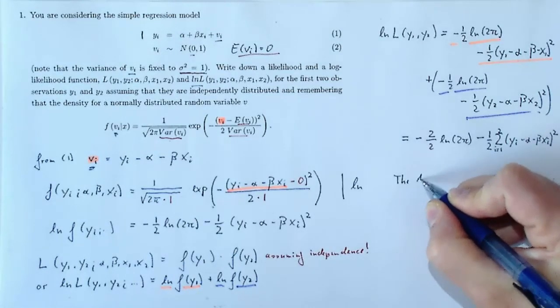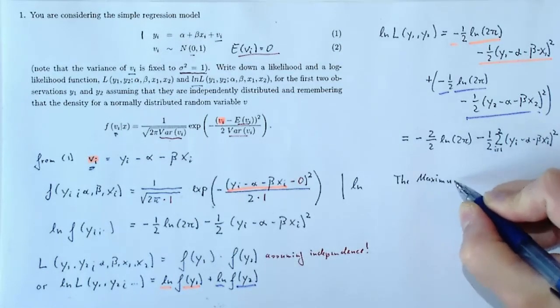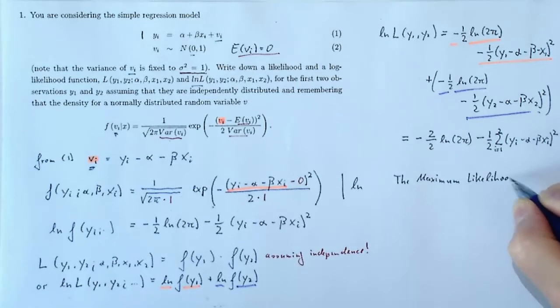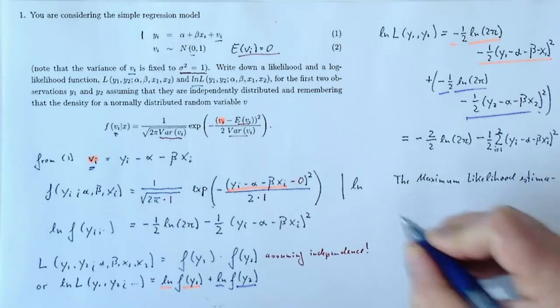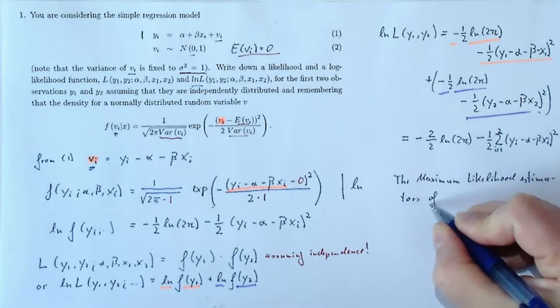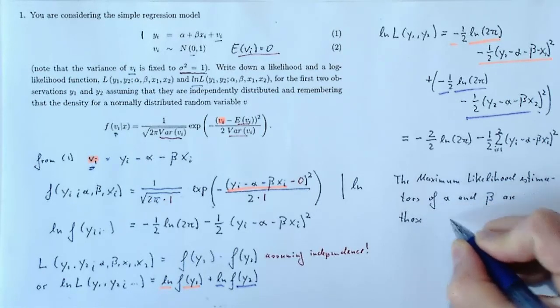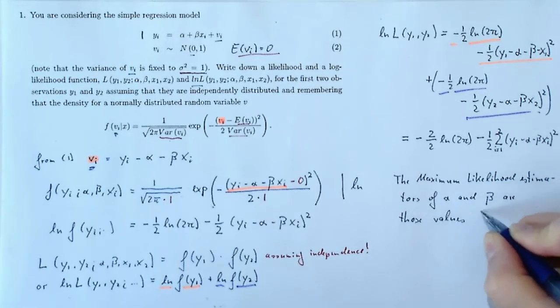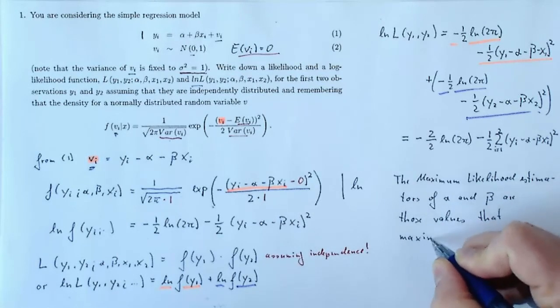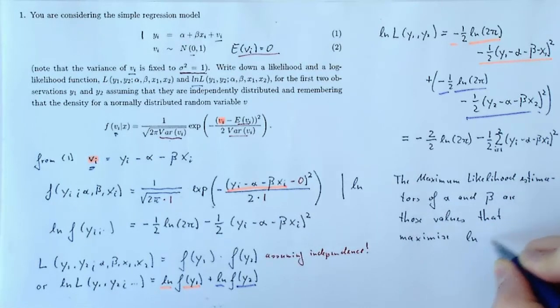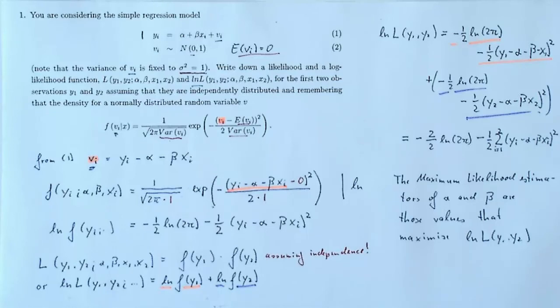So what we've done, we've basically answered the question. We've written down the log likelihood function for our particular problem. Now the maximum likelihood estimators of alpha and beta will be those values for these parameters that maximize this function. You can see ln L is a function of alpha and beta. It will change values with alpha and beta. We will choose those that maximize that function.